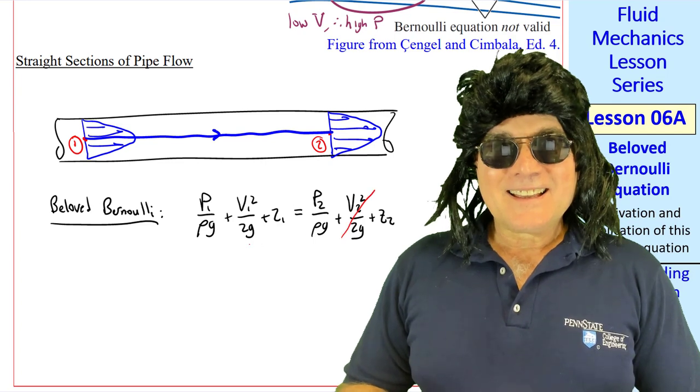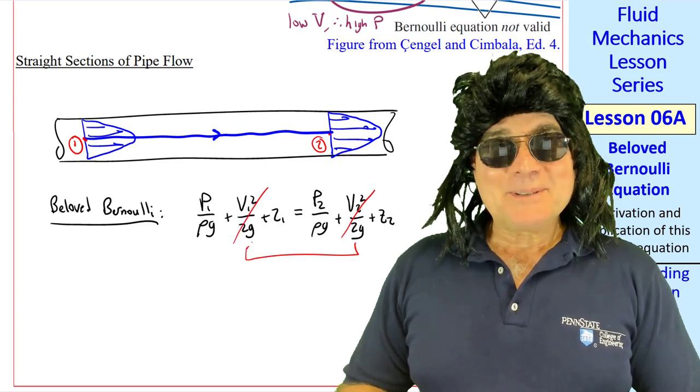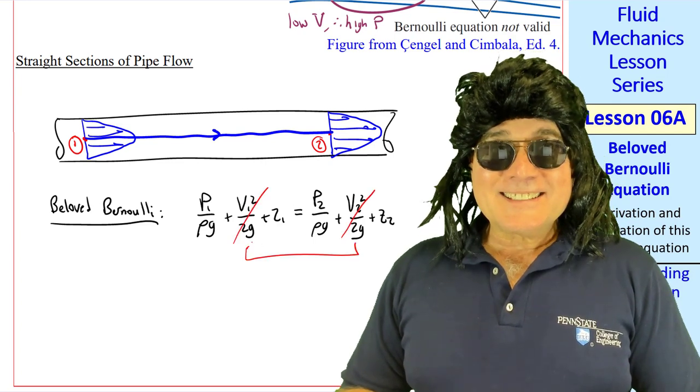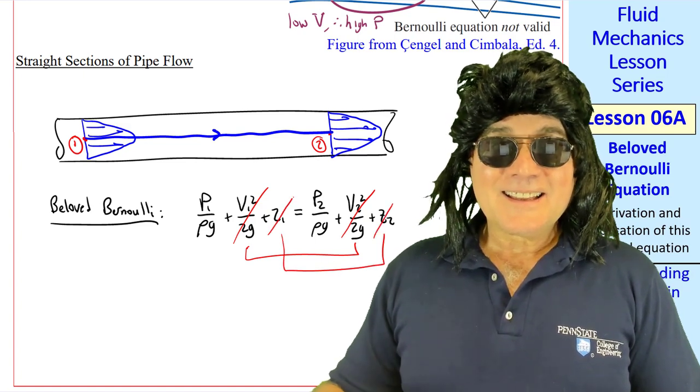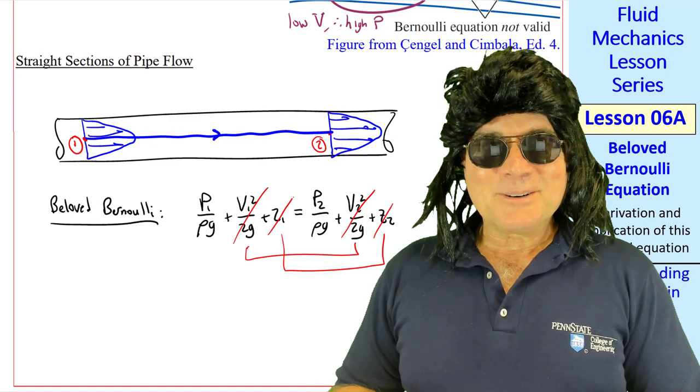Okay, so these two cancel. And since the pipe is horizontal, the Zs have to cancel out, dude. Okay, I'll cross those terms out. Then P1 has to equal P2.